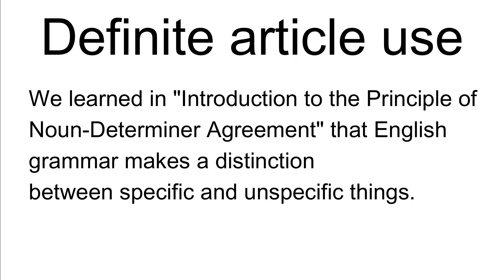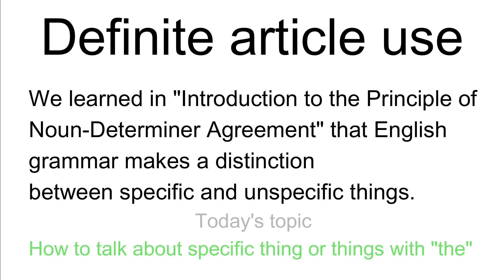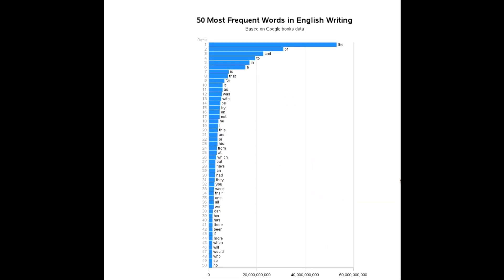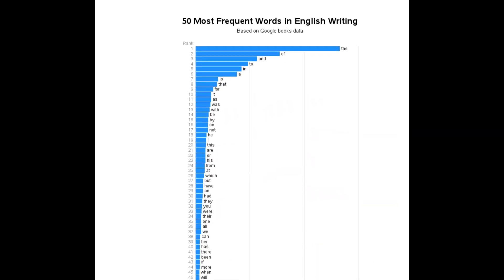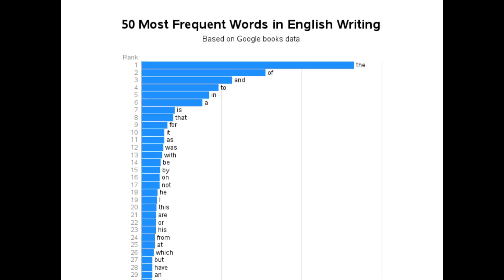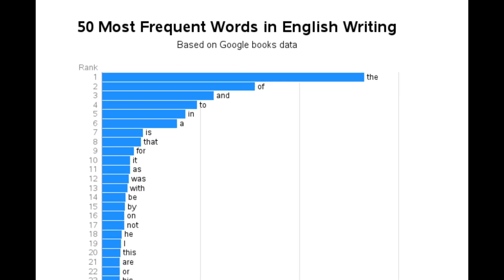Definite article use. When referring to things with nouns, English grammar makes a distinction between specific and unspecific things. Specific things are things we can point at. To talk about specific things, the definite article 'the' is the most used. The can be used with both countable and uncountable nouns and singular and plural nouns, making 'the' the most used word in English.